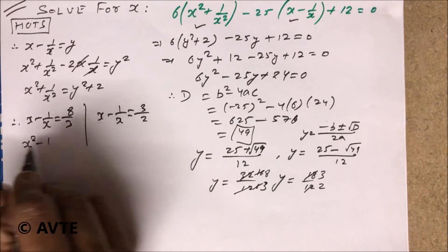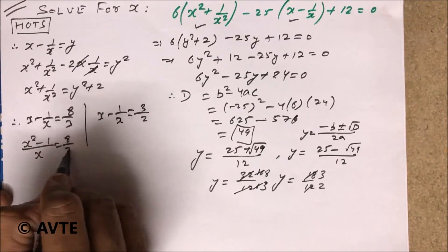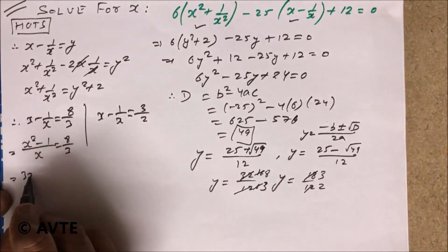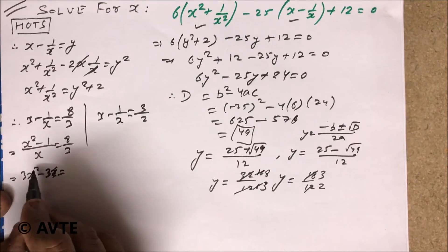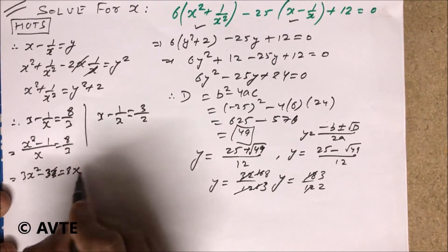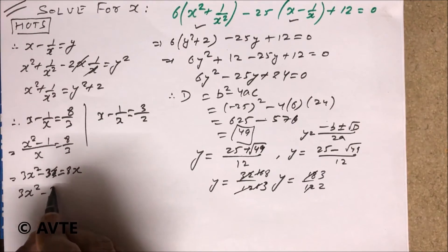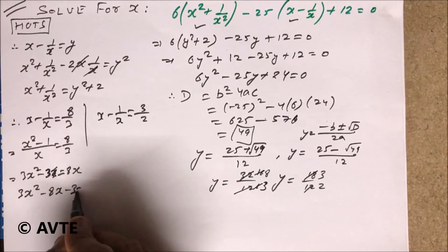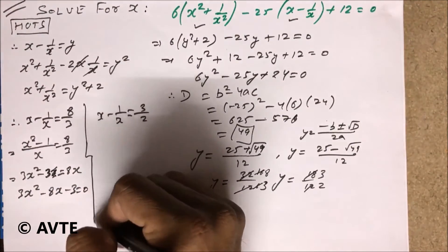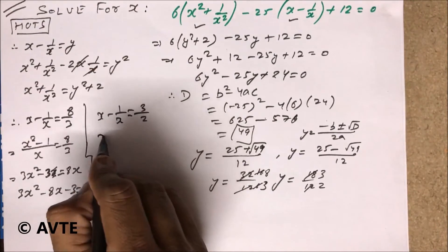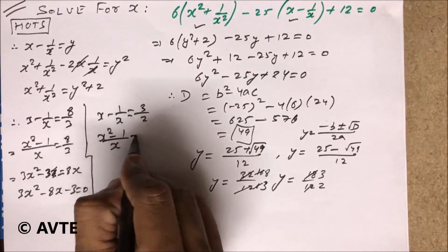So again you have to multiply. This is quadratic equation 3x square minus 3 is equal to 8x. This is 3x square minus 8x minus 3 is equal to 0. This quadratic equation and this is x square minus 1 by x is equal to 2 by 3. So this is 3x square.